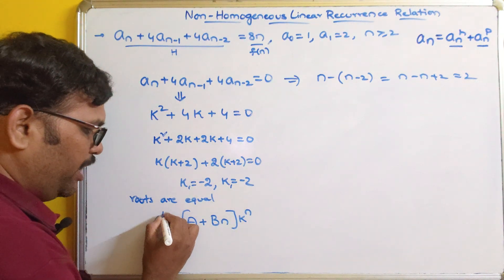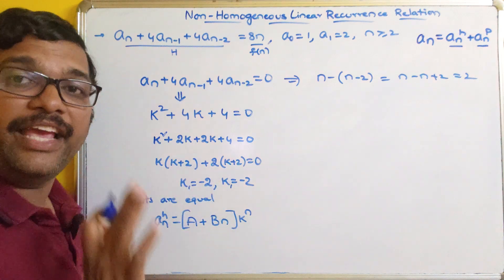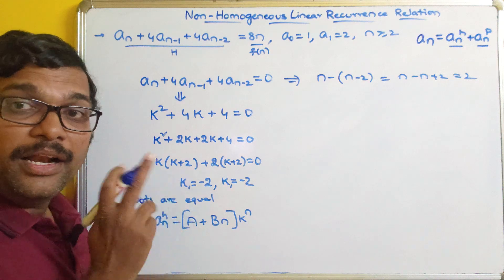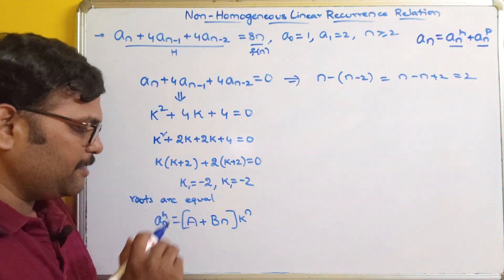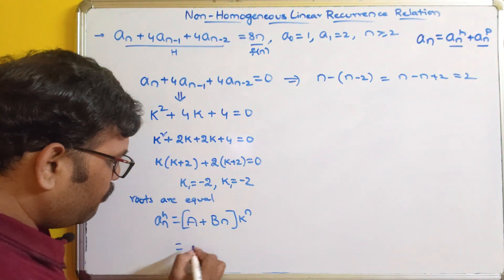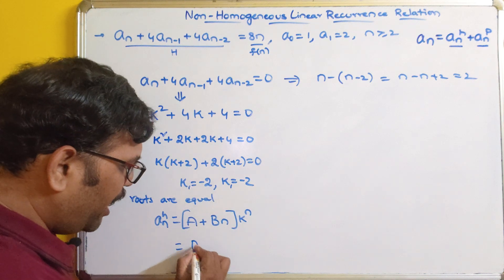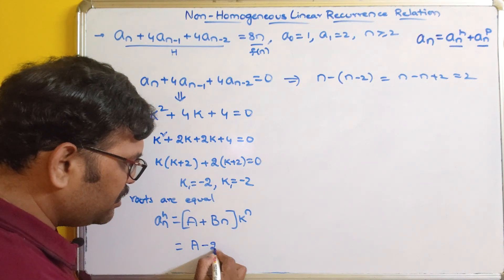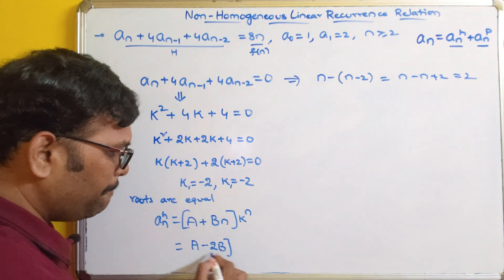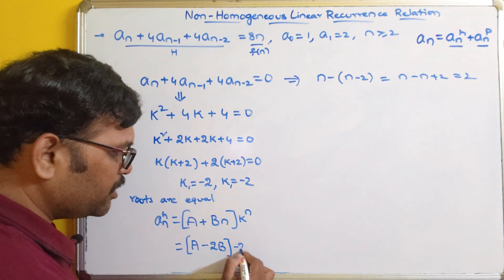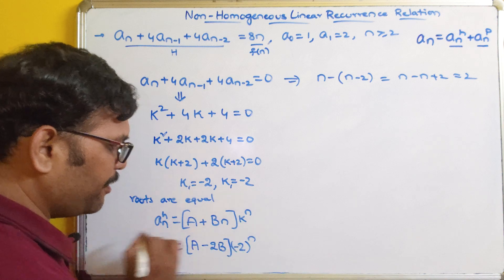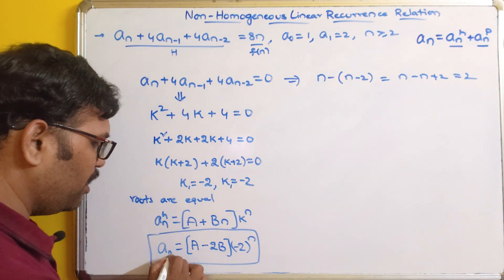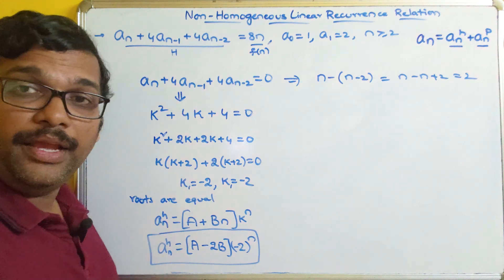So a_nh — the homogeneous general solution — becomes (a + bn)(-2)^n. We don't know the values of a and b yet, but we know k = -2. This is the general solution for the homogeneous part, called a_nh.